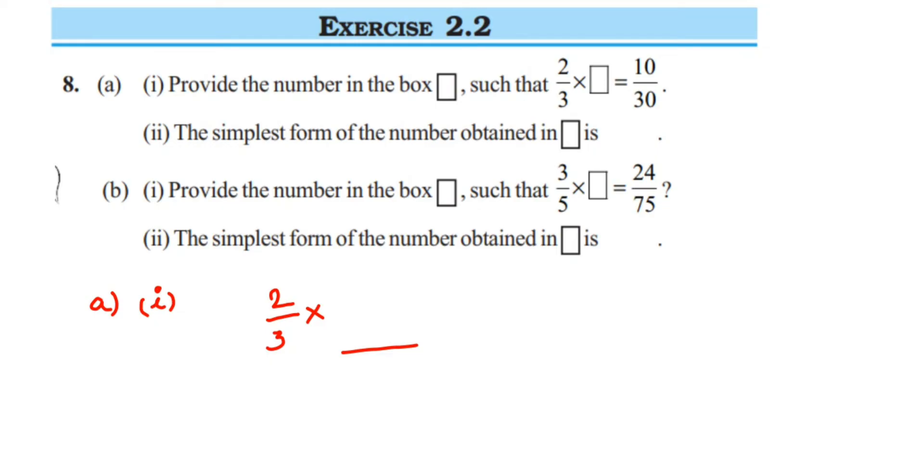Obviously we're going to multiply with a fraction, because here we also have a fraction, 10 upon 30. Now think, the 2 has become 10, so with 2 what should we multiply to get 10? Two fives are 10, so in the numerator we're going to get 5.